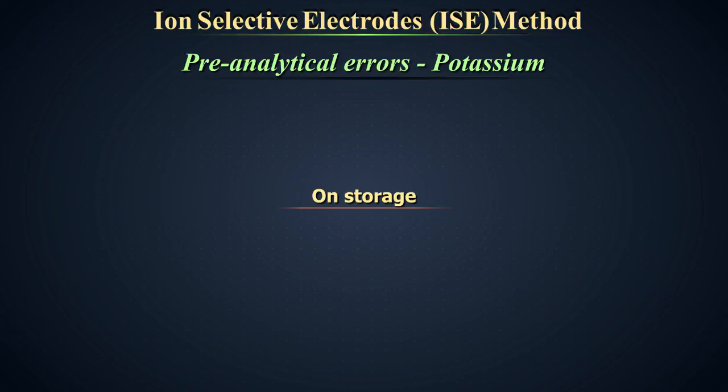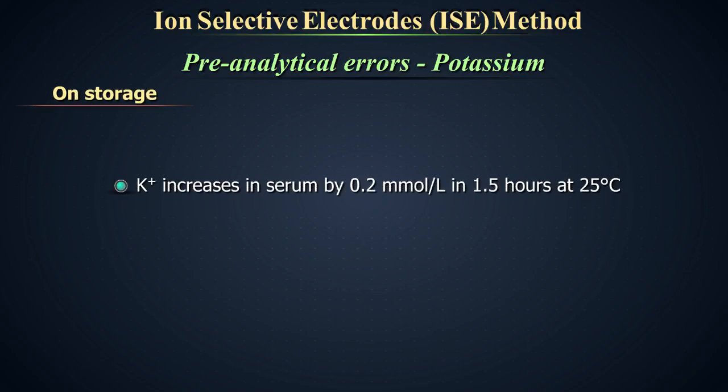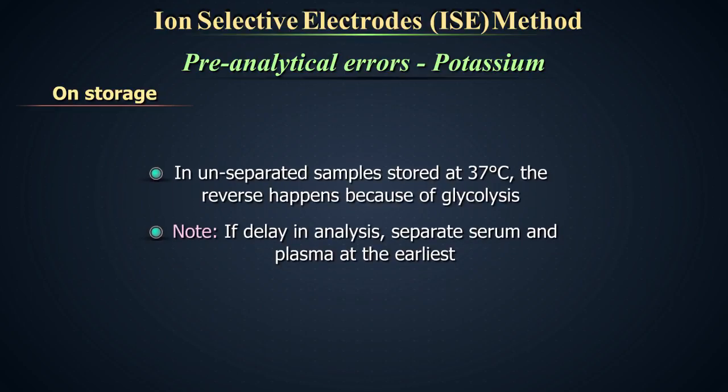Storage. Time and temperature. Potassium increases in serum by 0.2 millimoles per liter in 1.5 hours at 25 degrees Celsius. At 4 degrees Celsius, the increase is considerably greater. Up to 2 millimoles per liter increase can happen in serum in 4 hours at 4 degrees Celsius.